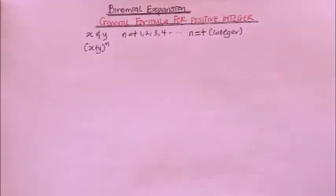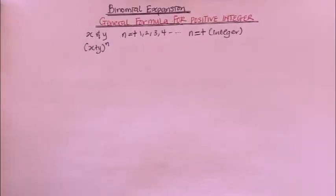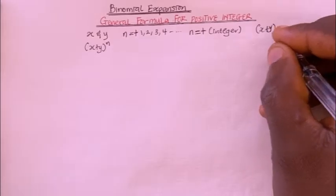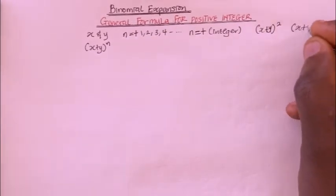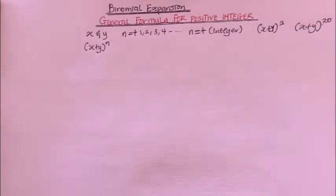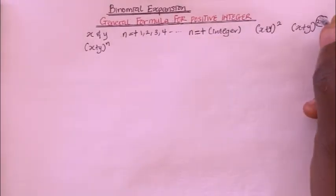Don't forget that we can actually apply Pascal's Triangle and it is going to work, but Pascal's Triangle takes time whenever we want to use it to expand a binomial expression that has a large power. There's a difference between having x plus y raised to the power of 2 versus x plus y raised to the power of 20. If they ask you to expand x plus y all raised to the power of 20, it will actually take time to apply Pascal's Triangle. So you can use this general formula for any binomial expression in which the integer is positive.